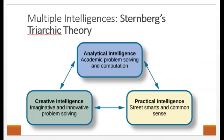Over time, many psychologists have come to argue that intelligence isn't just a single trait. Several have proposed multiple types of intelligence. One of these psychologists was Robert Sternberg. Sternberg proposed that intelligence comes in three main forms: analytical, creative, and practical. Analytical intelligence is the type of intelligence that we associate with doing well in school. It involves the ability to analyze, judge, evaluate, compare, and contrast. It's sometimes referred to as book smarts.